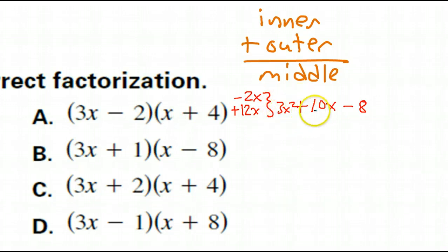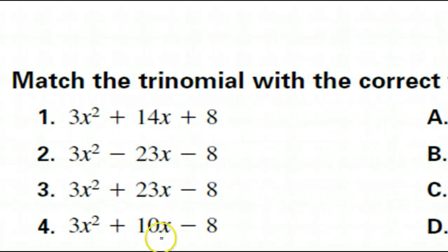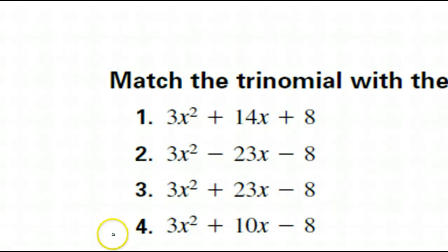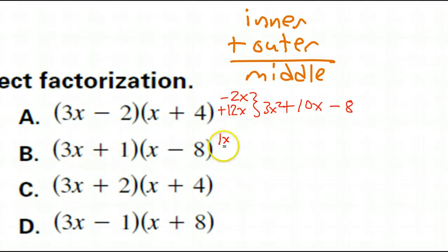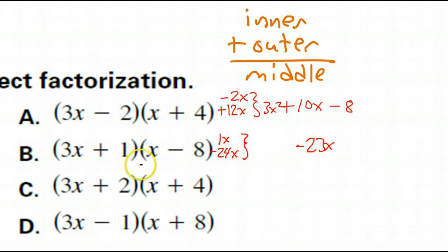Next: inner I have 1x, outer I have negative 24x — together that gives middle of negative 23x. Positive 1 times negative 8 is negative 8. So that's 3x squared minus 23x minus 8, which means this is B.